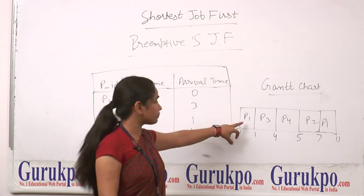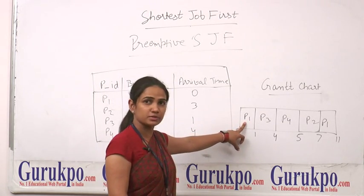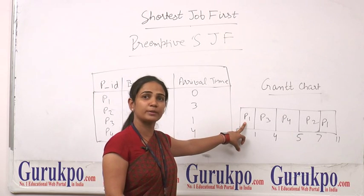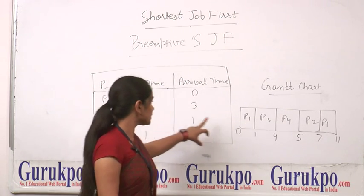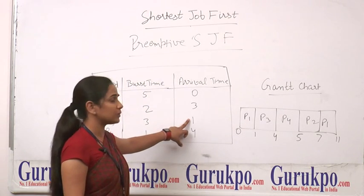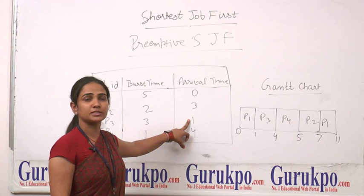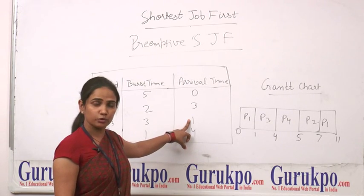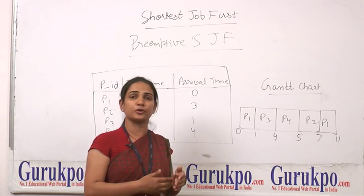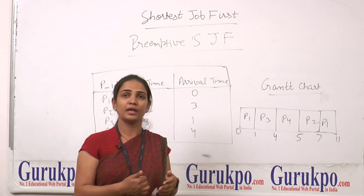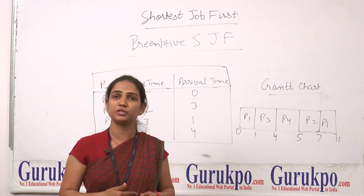We can see that processor P1 has used the processor for just 1 millisecond. Because at arrival time 1, process P3 has just arrived. So the processor will be snatched from P1 and will be given to process P3.